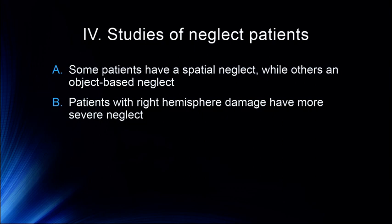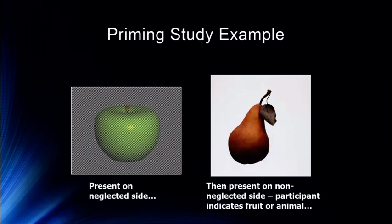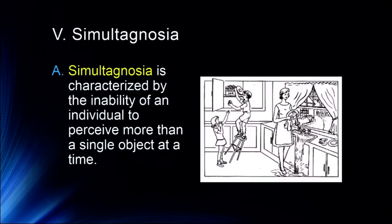Interestingly, priming studies show that patients process information in the neglected field to some degree. Using repetition priming and semantic priming, researchers present a stimulus like an apple to the neglected left visual field, then on the non-neglected side present another stimulus and ask if it's a fruit or an animal. Participants are faster at identifying the target because the apple was presented in the neglected side, compared to when something unrelated was presented in the neglected side. So you get that kind of semantic or repetition priming in these studies.